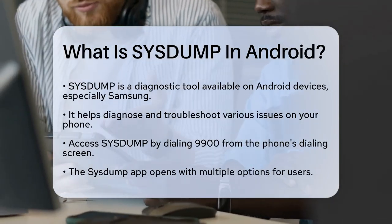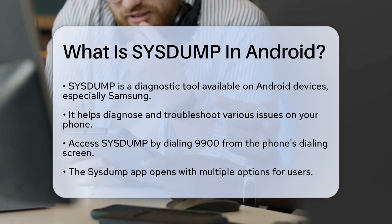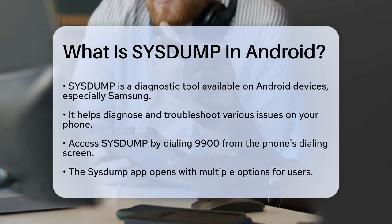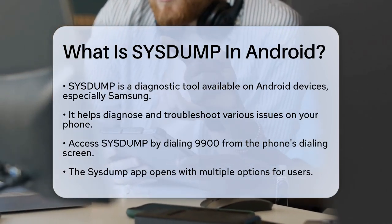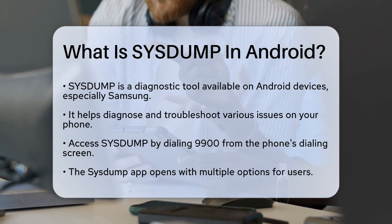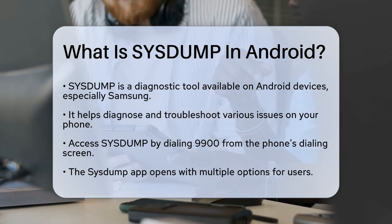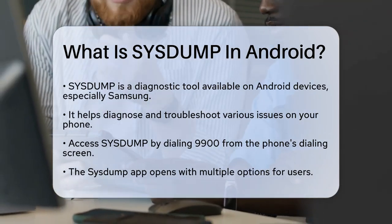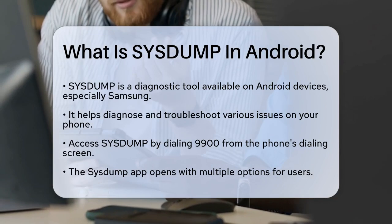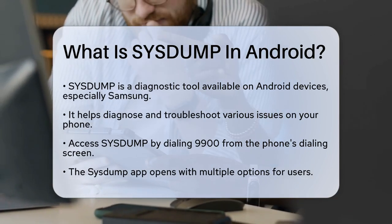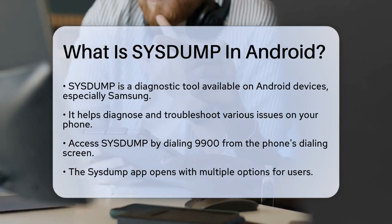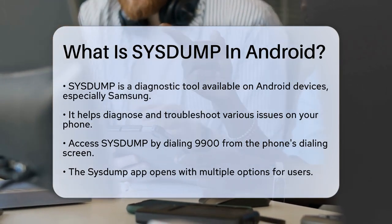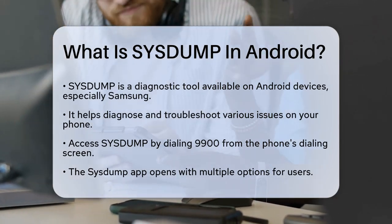SysDump is a built-in feature, particularly useful on Samsung handsets, that allows you to dump logs and run several debugging procedures directly from your phone. To access SysDump, you simply need to dial a specific code, *#9900#, from the dialing screen. This will open the SysDump app.